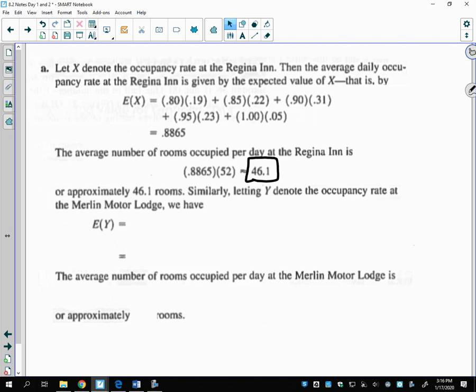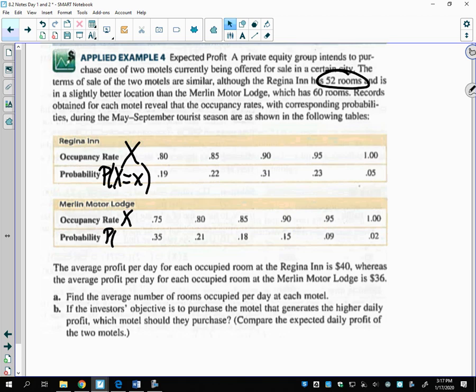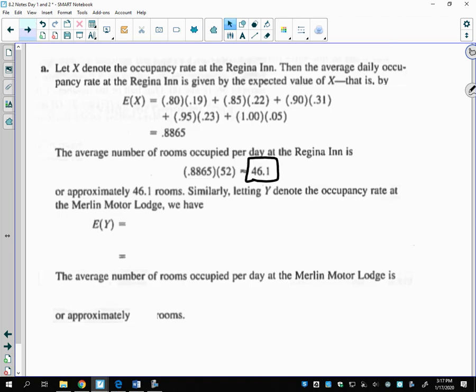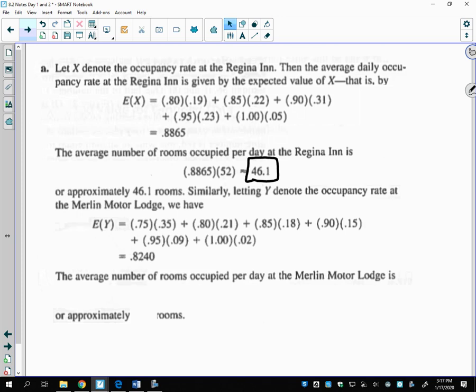We can do the same thing for the Merlin Motor Lodge. If this represents our random variable, this would be our probability. To find the expected value, I take this times this plus this times this, and I get 0.8240. But remember, the Merlin Motor Lodge had more rooms—they had 60 rooms. So I take that times 60 rooms and get approximately 49.4 rooms occupied on average during that time. This is where people in the business world can really use expected value.